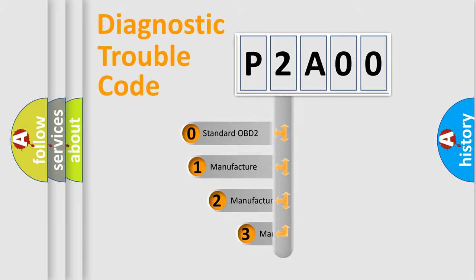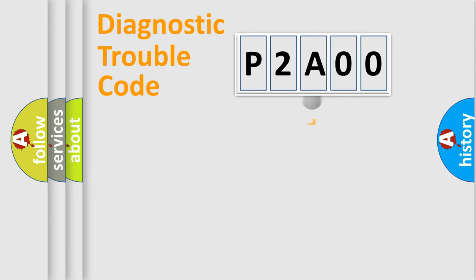If the second character is expressed as zero, it is a standardized error. In the case of numbers 1, 2, 3, it is a manufacturer-specific expression of the car-specific error.